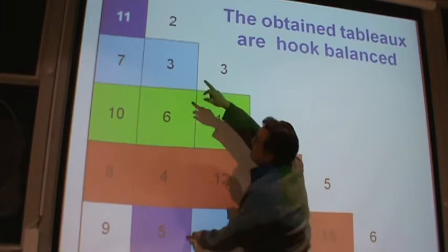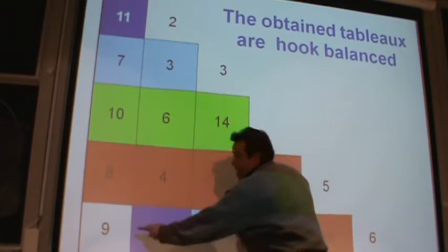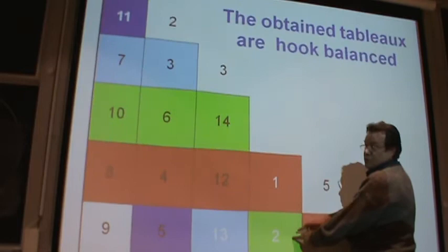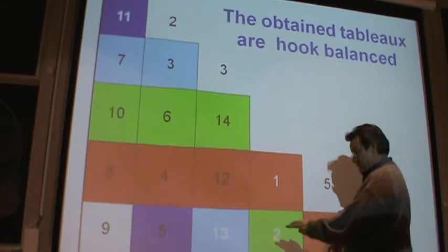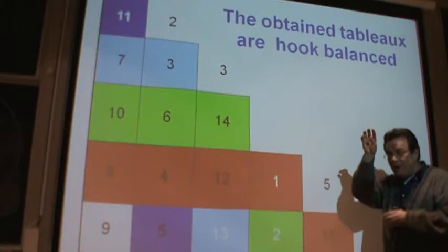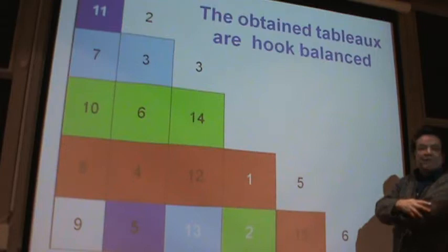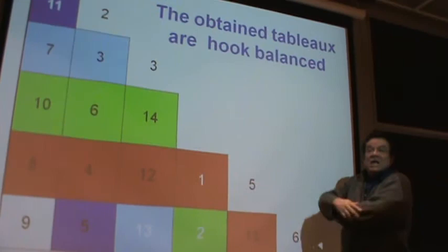Look at what happened. That number is 11 and this is 5 — the corner value 9 is in between. How about the other two partners? 7 and 13 — 9 is in between. The other two partners, 10 and 2 — 9 is in between, maybe in reverse order, but in between. The other two partners, 8 and 15 — 9 is in between. So the property is: the corner of every L satisfies that the value of the corner is in between the values of its partners. This is called the balance property of the hooks. This is true for every L you look at.